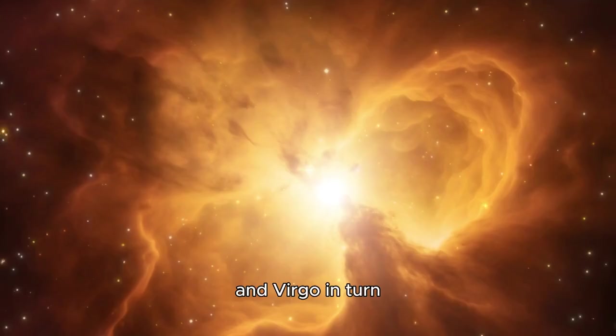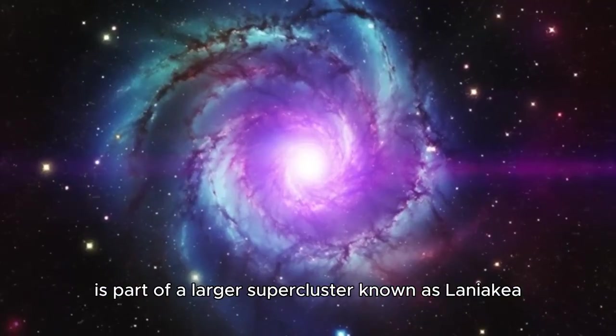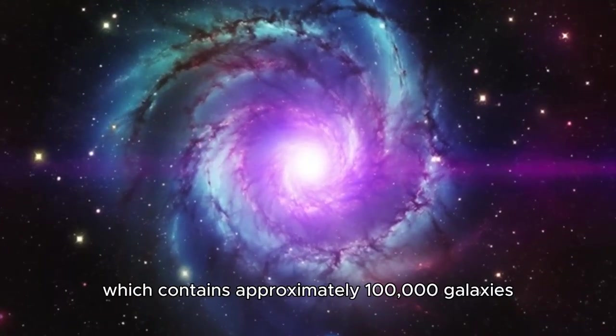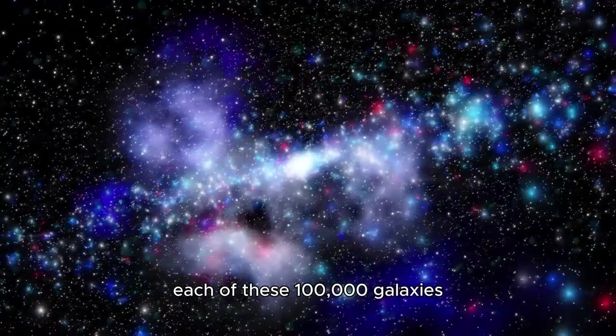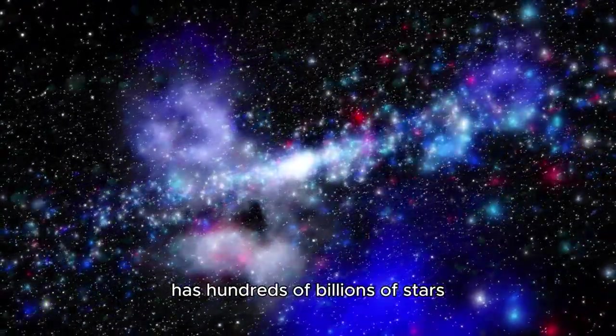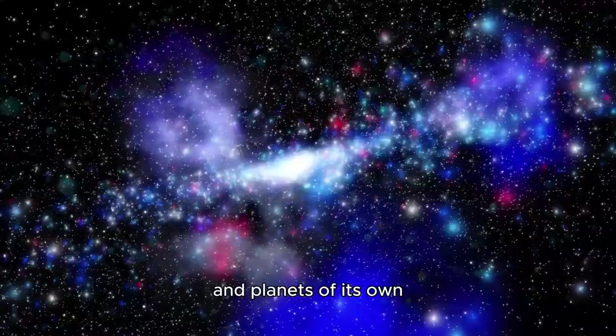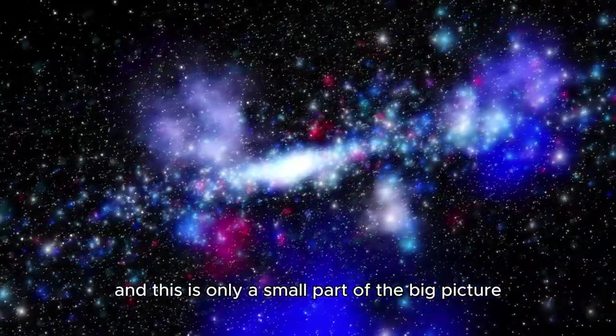And Virgo, in turn, is part of a larger supercluster known as Laniakea, which contains approximately 100,000 galaxies. Each of these 100,000 galaxies has hundreds of billions of stars and planets of its own. And this is only a small part of the big picture.